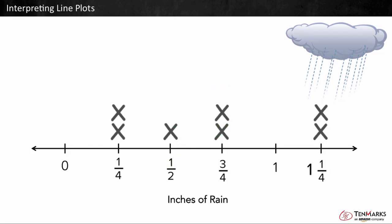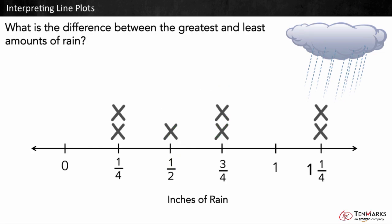Let's try another question. What is the difference between the greatest and least amounts of rain? Here we need to find the difference or subtract the greatest and least inches of rain. The greatest inches of rain on our line plot is one and one-fourth, and the least is one-fourth. This means we subtract one and one-fourth and one-fourth, which equals one. The difference between the greatest and least amounts of rain is one. So, it is one inch of rain.